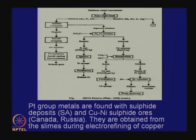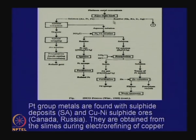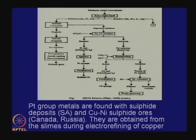Platinum group metals are highly noble metals, so they have to be leached by aqua regia, which is a combination of two acids. In aqua regia, some metals like rhodium, ruthenium, iridium, and silver do not dissolve - they form a common residue. But platinum, gold, and palladium dissolve in aqua regia.